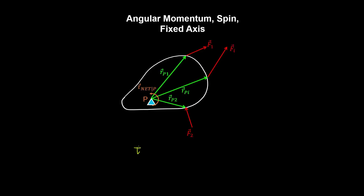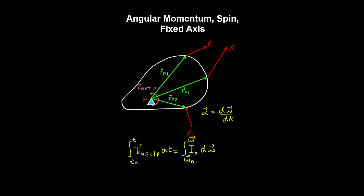We've previously defined the rotational analogue of Newton's second law for rigid body rotation about a fixed axis. Using the kinematic relationship between the angular acceleration and angular velocity, and separating the variables and integrating both sides of this equation, we have an expression for the angular impulse, or the rotational impulse, which is equal to the change in angular momentum. For a constant moment of inertia, this evaluates to the following expression.